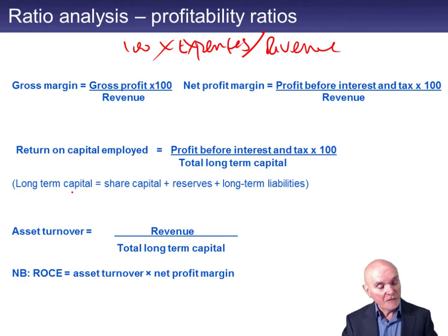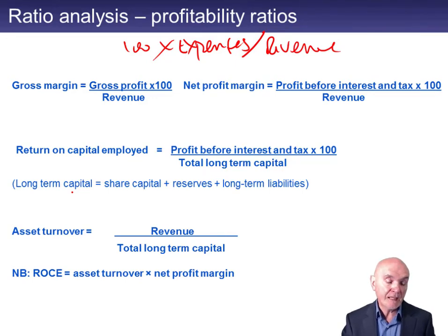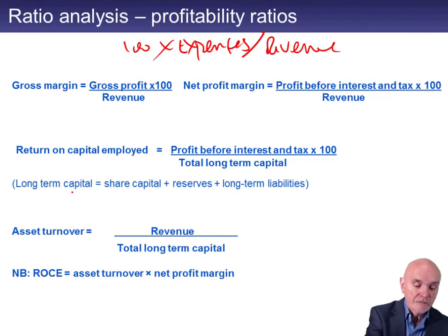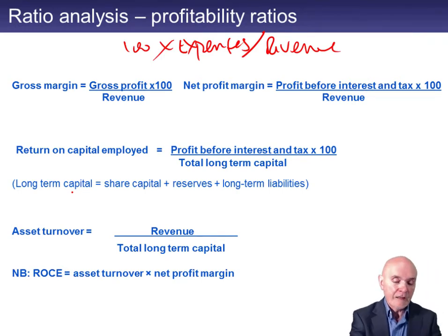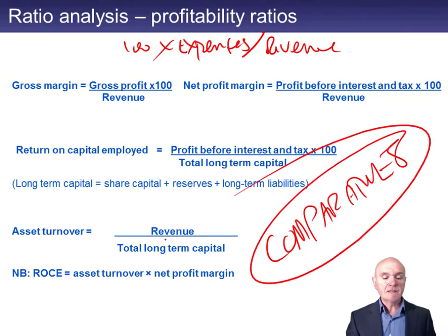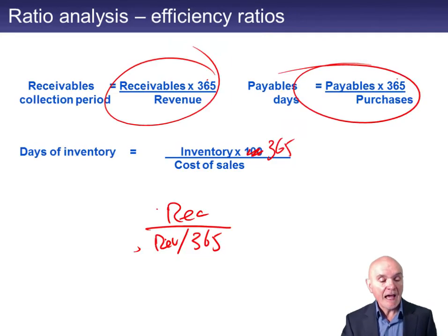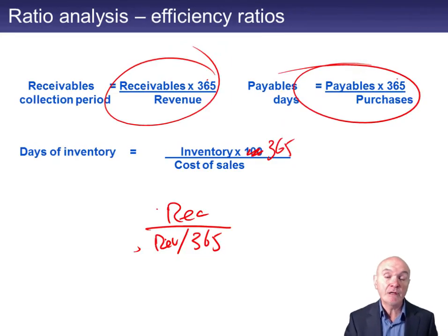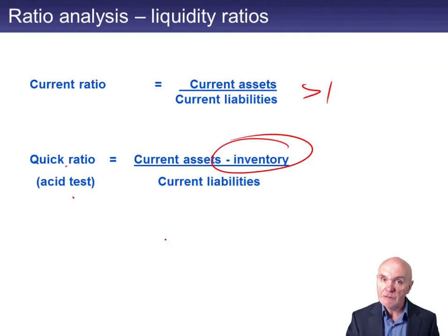These ratios are difficult to say very much about in absolute terms. You can't really say whether a gross profit percentage is good or bad. One of the secrets of ratio analysis is comparatives. Have things got better or worse than last year? Have the receivables collection periods got longer or shorter? Have the inventory days got longer or shorter? Then you can begin to say something more sensible about it.